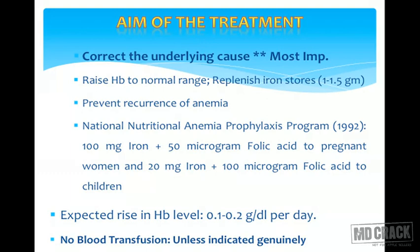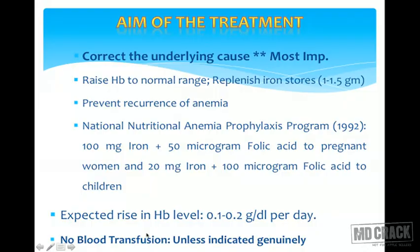Repeat CBCs and peripheral smear interpretation should be done at intervals of seven to ten days — you may see one to two grams of hemoglobin rise in that time. Most importantly, prevent recurrence. The National Nutritional Anemia Prophylaxis Program supplements pregnant women with 100 mg iron plus 50 micrograms folic acid, and children with 20 mg iron plus 100 micrograms folic acid. This program was established in 1992.